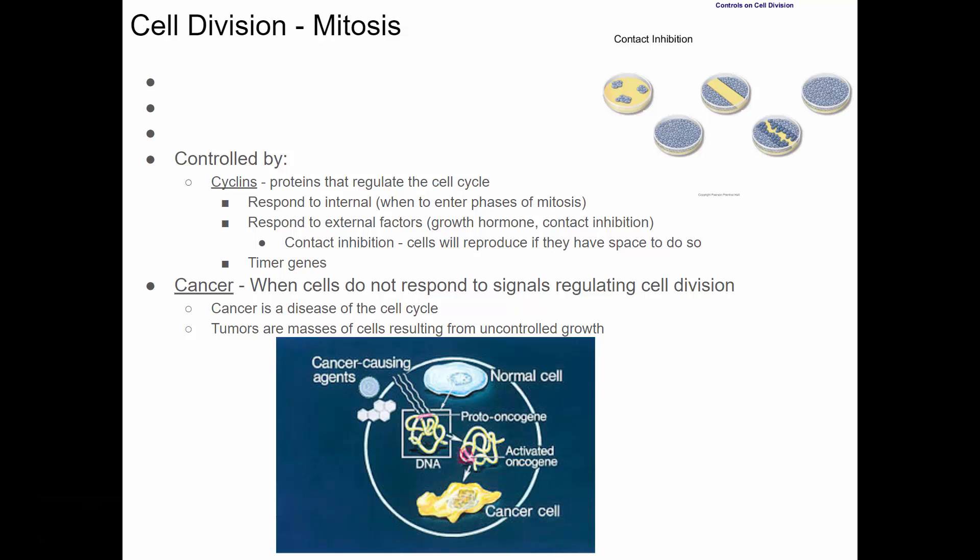Mitosis is cell division that's used to replace old cells, used for growth, and used for asexual reproduction. It's important that cells reproduce and divide, but only when necessary and only when appropriate. Cells have fairly complex methods that regulate when the cell divides. There are certain proteins called cyclins that help this happen. They can respond to internal stimuli from within the cell that tell when the cell should divide and when they go through different phases of mitosis. They also can respond to external factors.